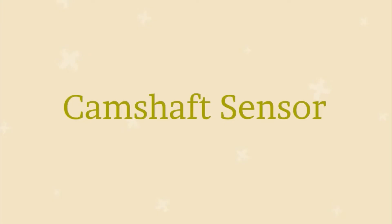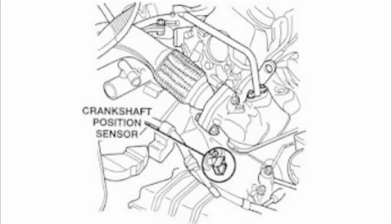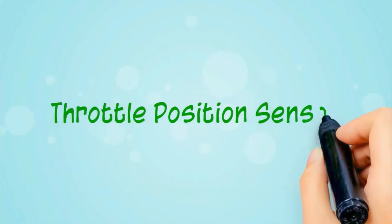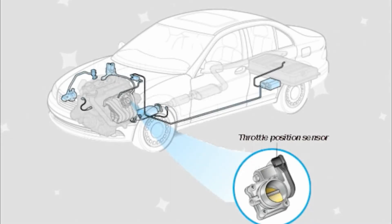Camshaft sensor is an electromagnetic sensor which produces voltage when a metal object moves past it. The sensor communicates with the ECM for the position of the camshaft, and it is fixed at the end of the camshaft. Throttle position sensor is linked with the accelerator pedal and the throttle body, sending information about injector pulse width and spark timing. It is located in the throttle body and is neither washable nor repairable.